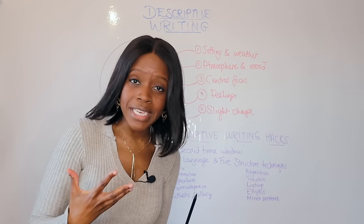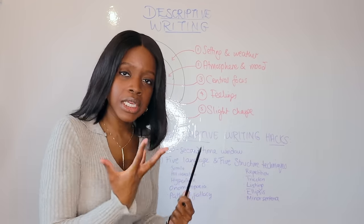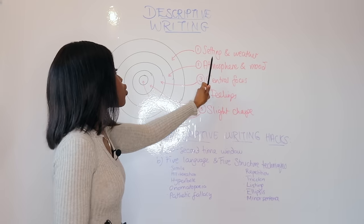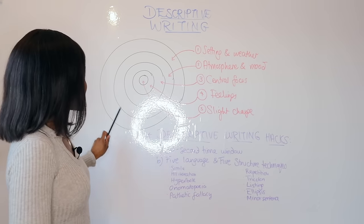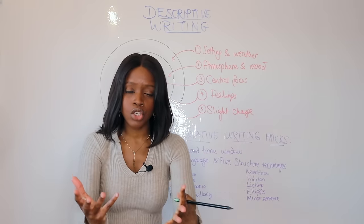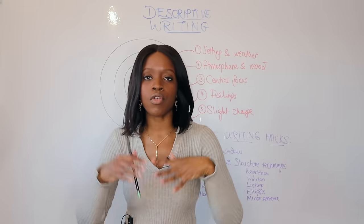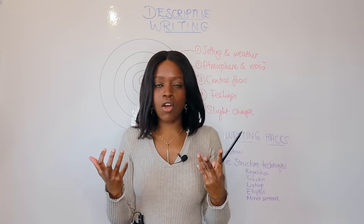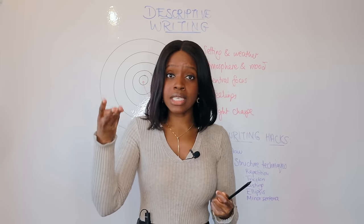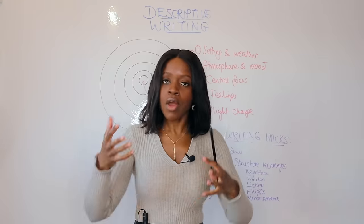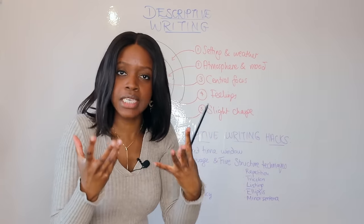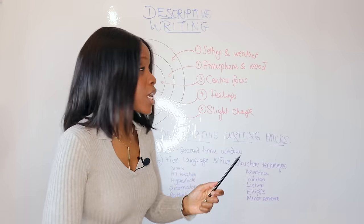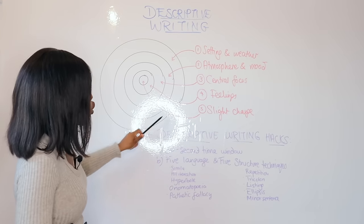For either an image or a statement question, always start with your setting and weather paragraph — the outer circle. Think about what is going on around the image. For example, if you're asked to describe a forest, think about whether it's hot or cold, daytime or nighttime, rainy or dry. Look around the image for what's not so obvious, and start by describing that. Your first paragraph should always be setting and weather.